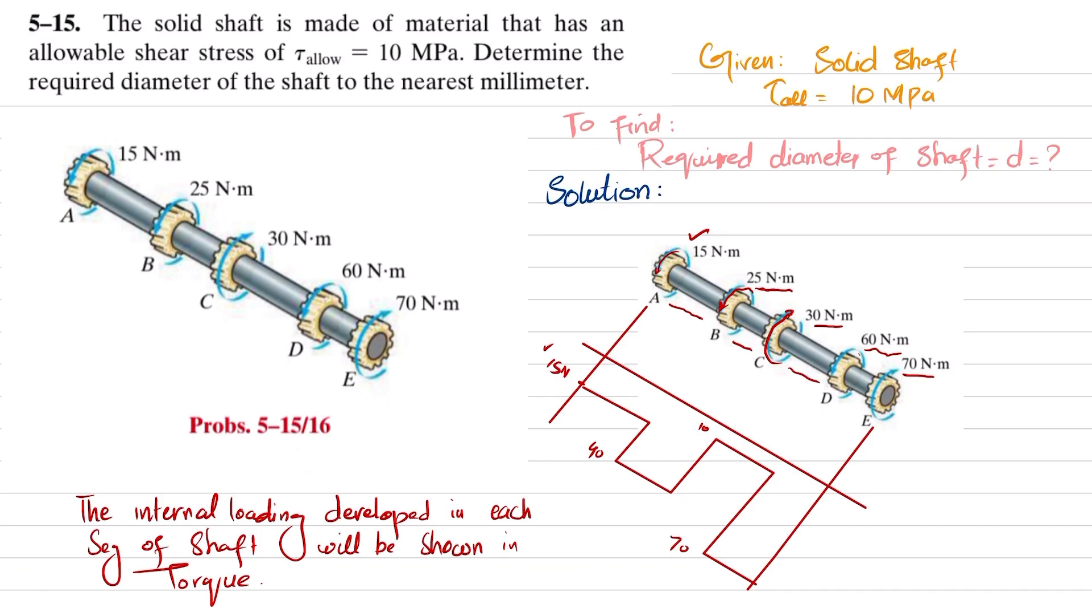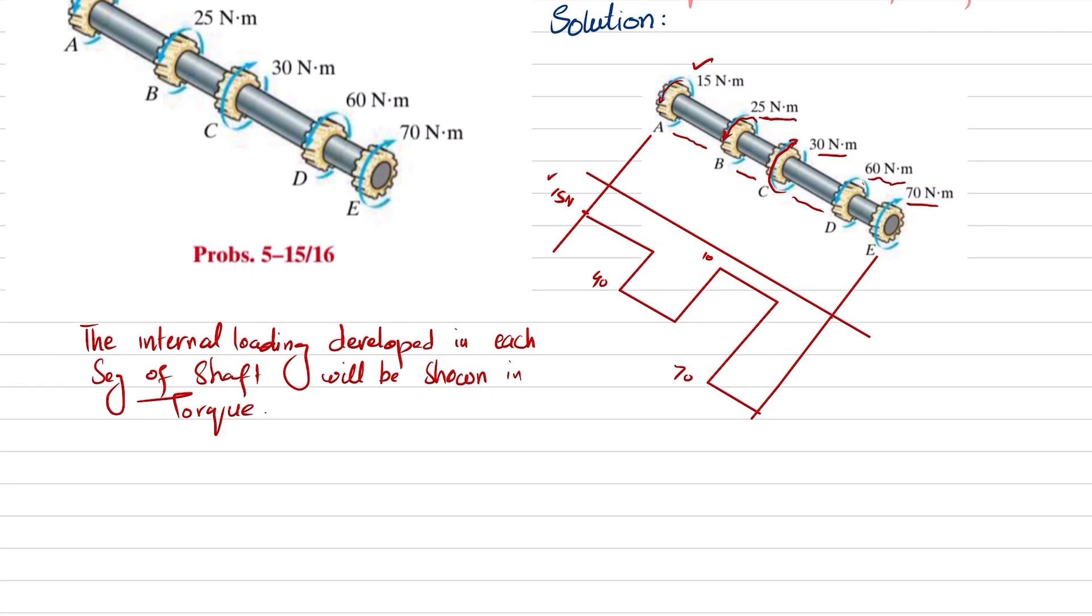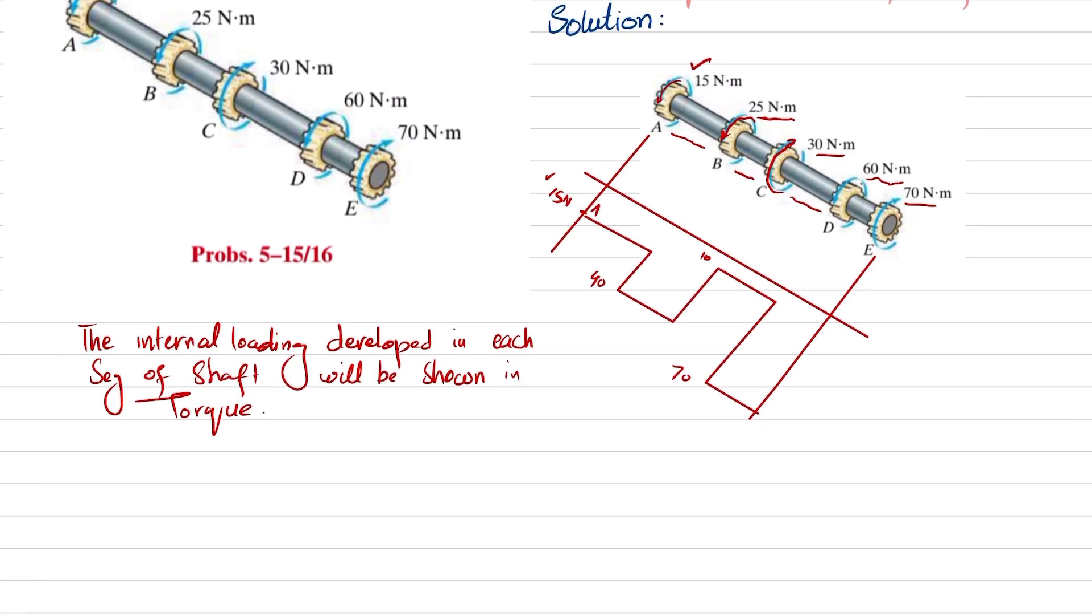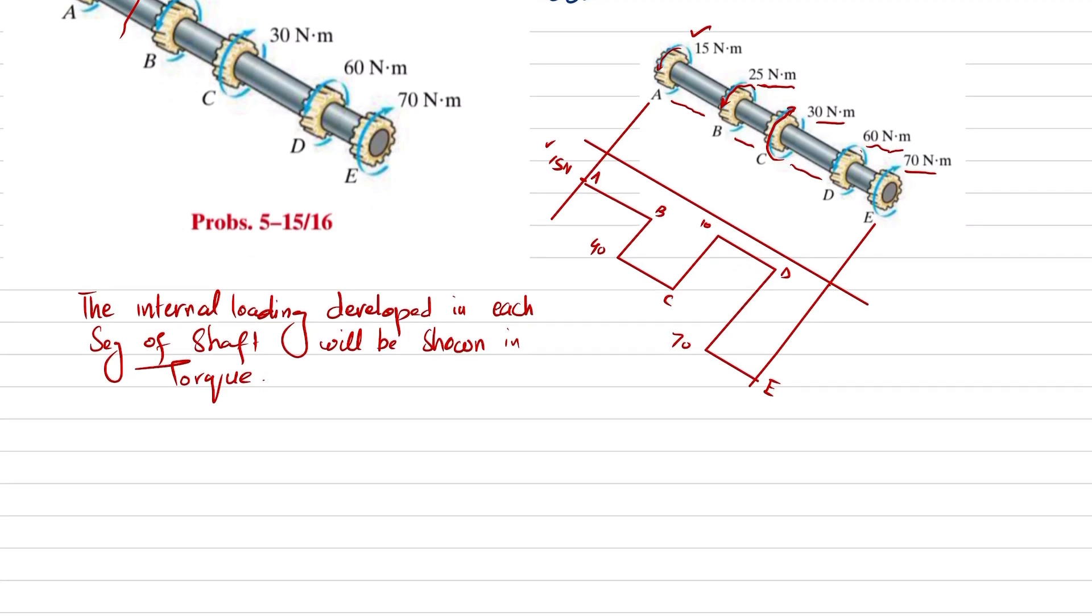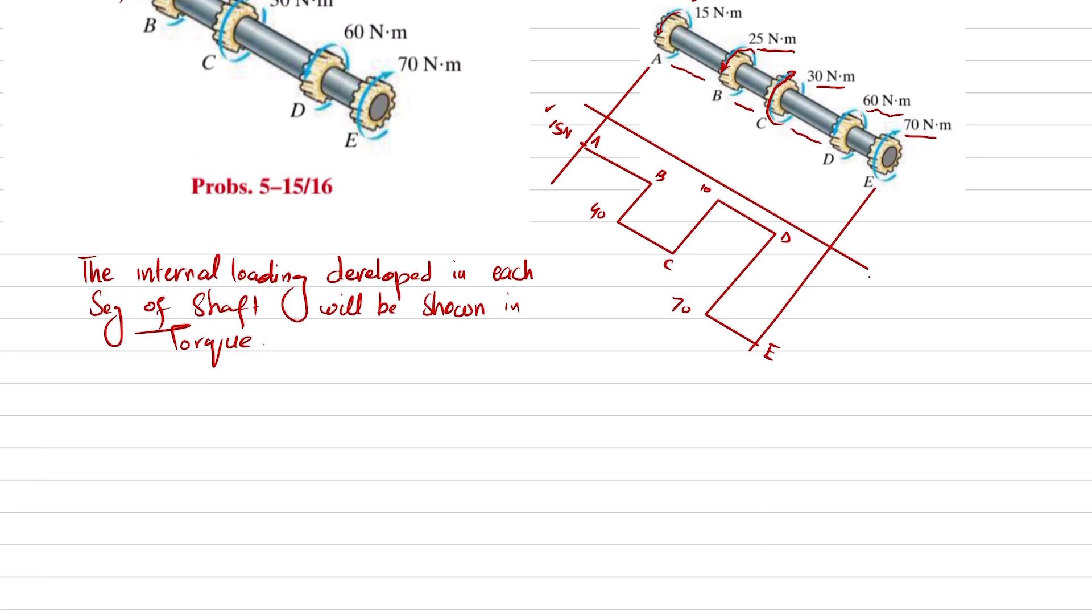It will be horizontal, and you can see at the end you have a torque of 70 in clockwise, so it will be zero. This is the torque diagram. This is point A, this is point B, this is point C, D, E. You can do this or you can take sections and draw. Now you can find the internal loading in each segment.